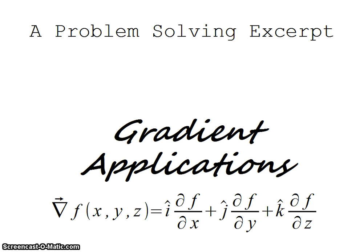The gradient as defined here at the bottom of the screen of a function is a function of 3 variables. It is the x unit vector times the partial of the function with respect to x, plus the y unit vector times the partial derivative of the function with respect to y, plus the z unit vector times the partial derivative of the function with respect to z.